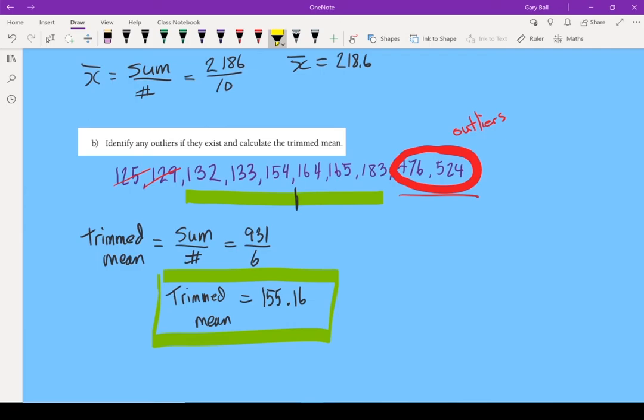That's trimmed mean in a nutshell. Now keep in mind, when you're trimming, use your judgment. What is considered an outlier, what is not? And count the same number off the top and the bottom. Outliers can happen on the bottom. Outliers can happen on top. Either way, just know how to recognize it.